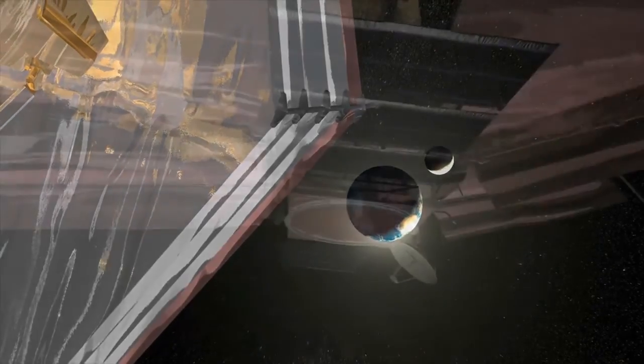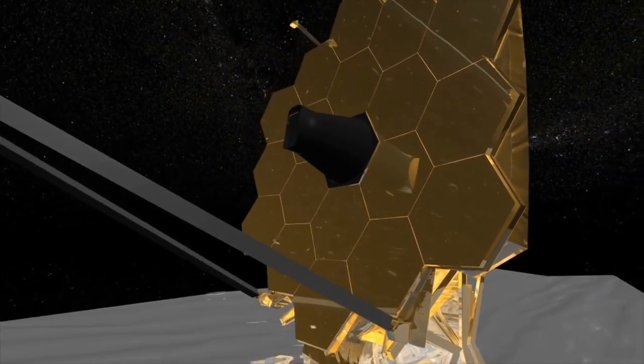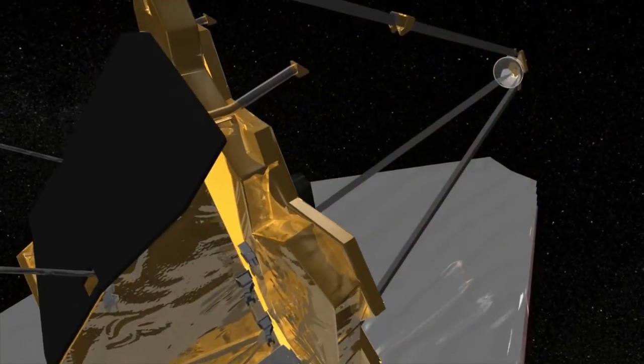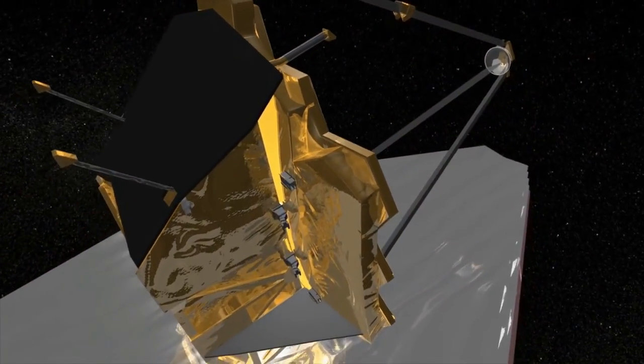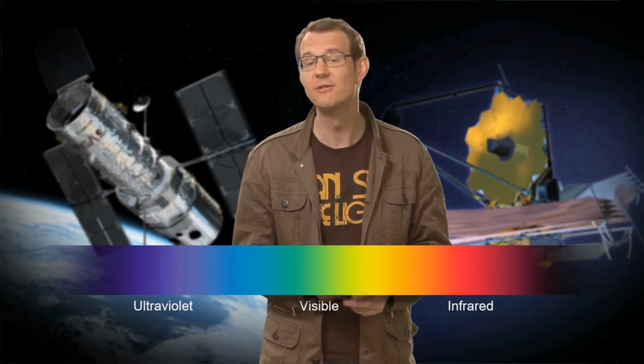JWST, which launches later this decade, has been designed to answer some of the fascinating questions that Hubble asked. How do stars form? When did the first galaxies appear? What hides in huge, dusty nebulae? To answer these profound questions, the JWST is designed to observe mainly in infrared light. That means that Hubble's ability to see across the spectrum, from ultraviolet through the visible all the way to the near-infrared, is a unique capability that no other telescope will have for decades to come.